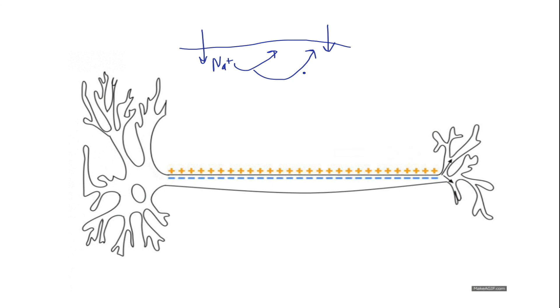And so that completes our discussion of the action potential. In the next lesson, we'll talk about neurotransmission, how the information gets from the action potential in one neuron to another.